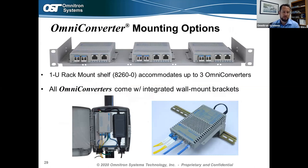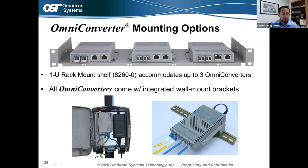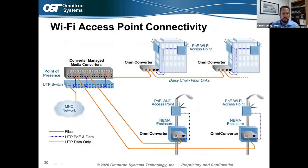Mounting options for Omni Converters include tabletop mounting, wall mounting with integrated brackets, and rack mount via shelf part number 8260. They can also be DIN rail mounted with a DIN rail bracket and fit nicely into NEMA enclosures for wall-mount situations. These outdoor enclosures protect the Omni Converter from the elements such as rain and wind.